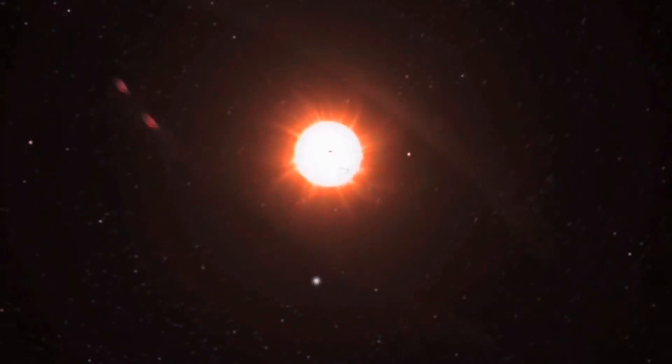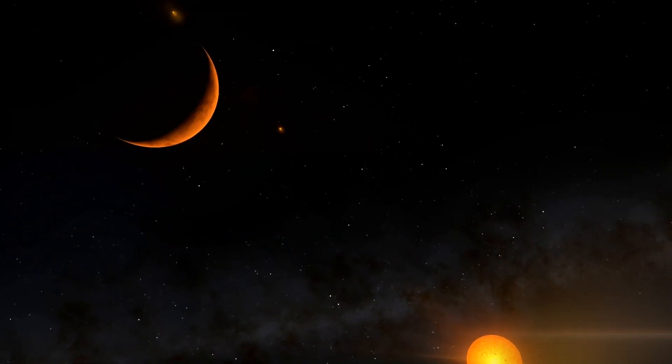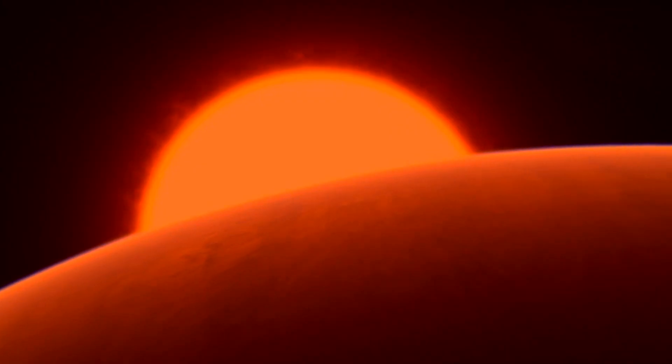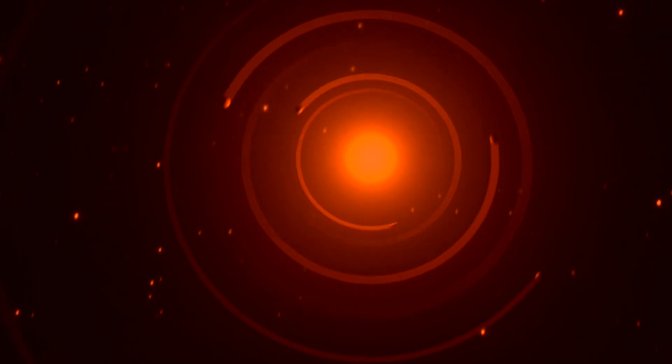All of the planets orbit so close to their parent star that they are likely to have become tidally locked, keeping one hemisphere constantly facing the star. There would be no sunrise nor sunset on these worlds, only a constant, unmoving orb of red light in the sky.